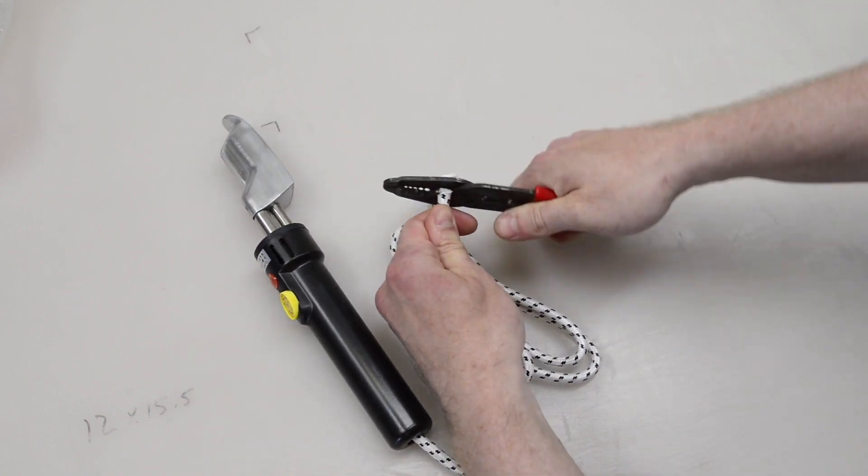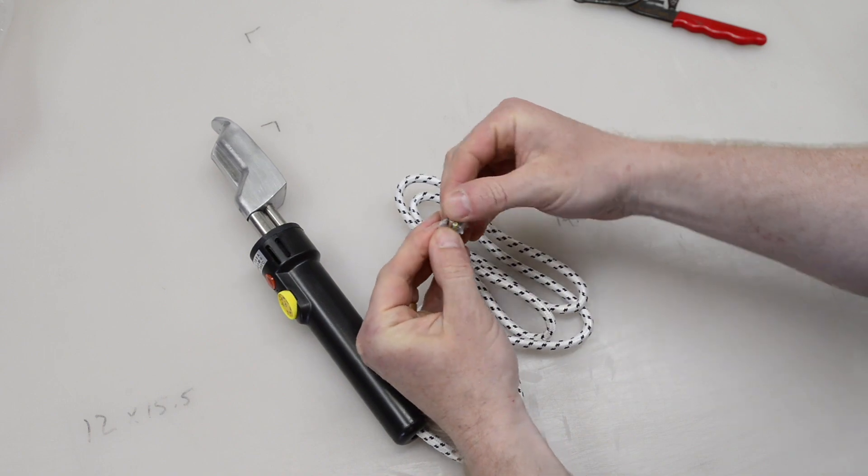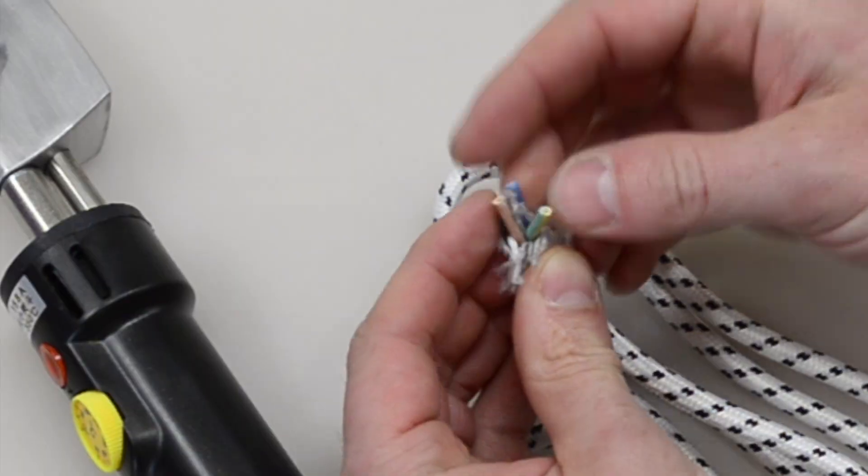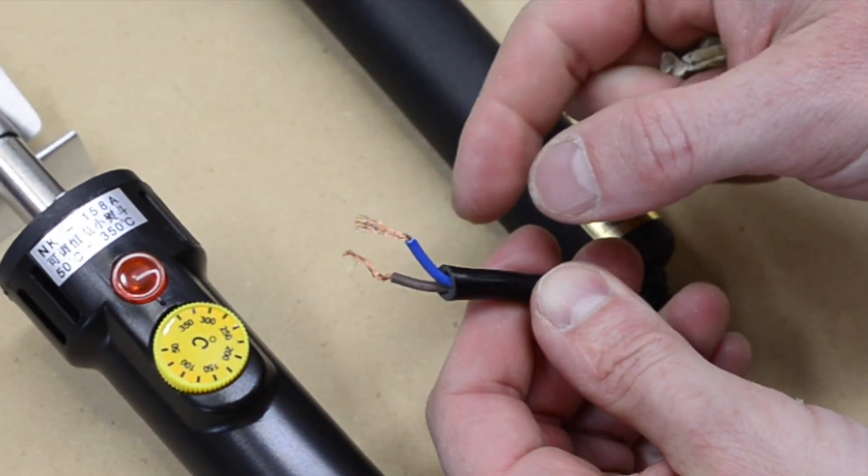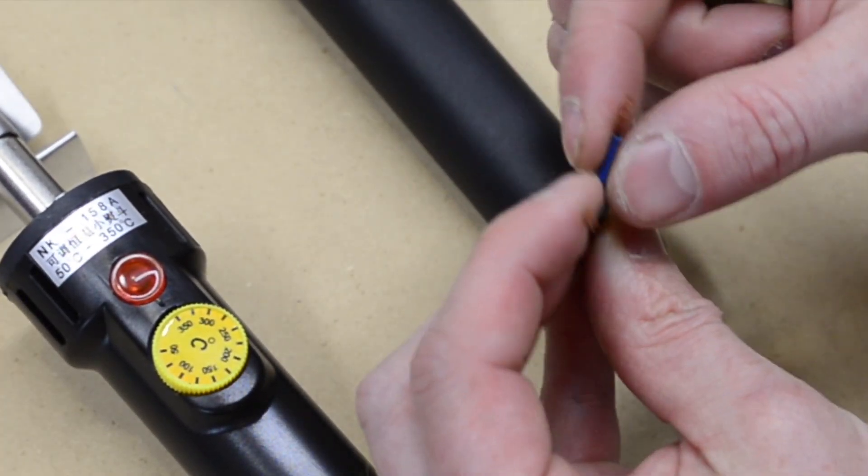To replace the plug, first cut off the old plug to see how many wires are inside the cord. Some irons have two wires and some have three, and then purchase a two or three pronged plug at your local hardware store.